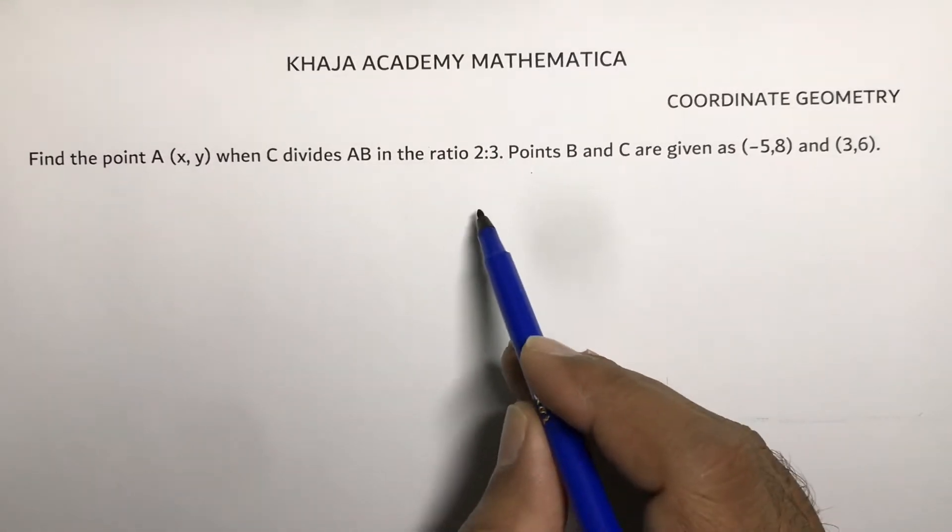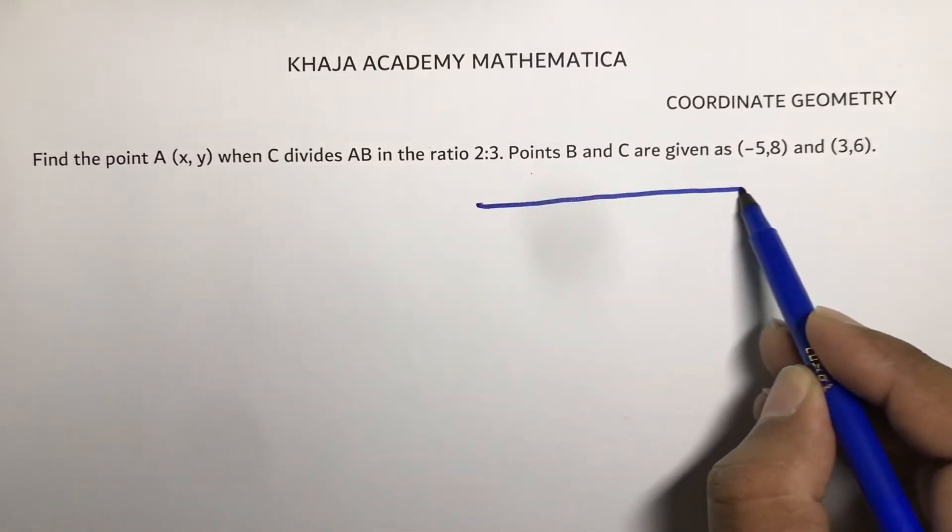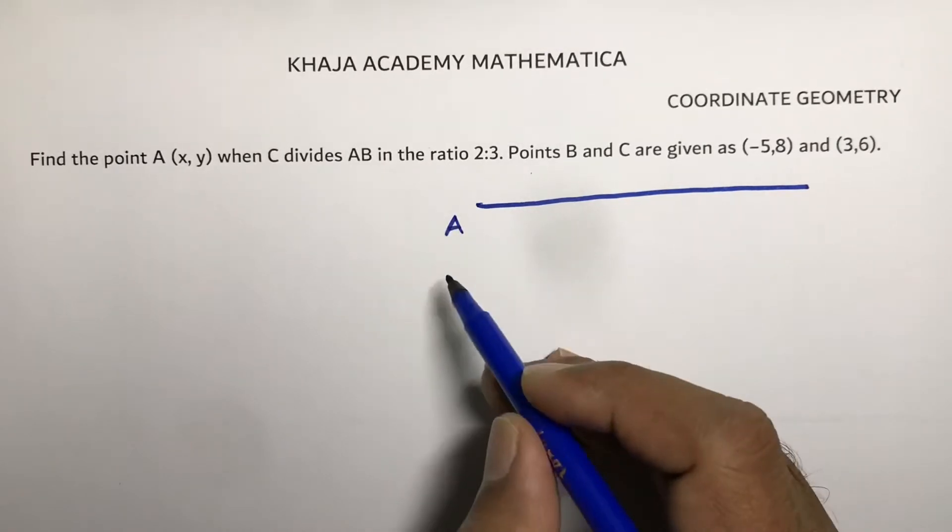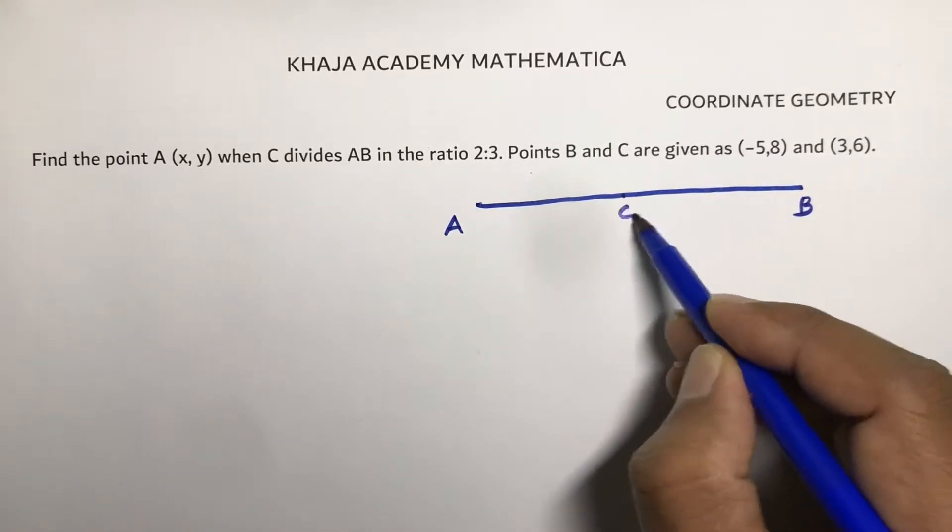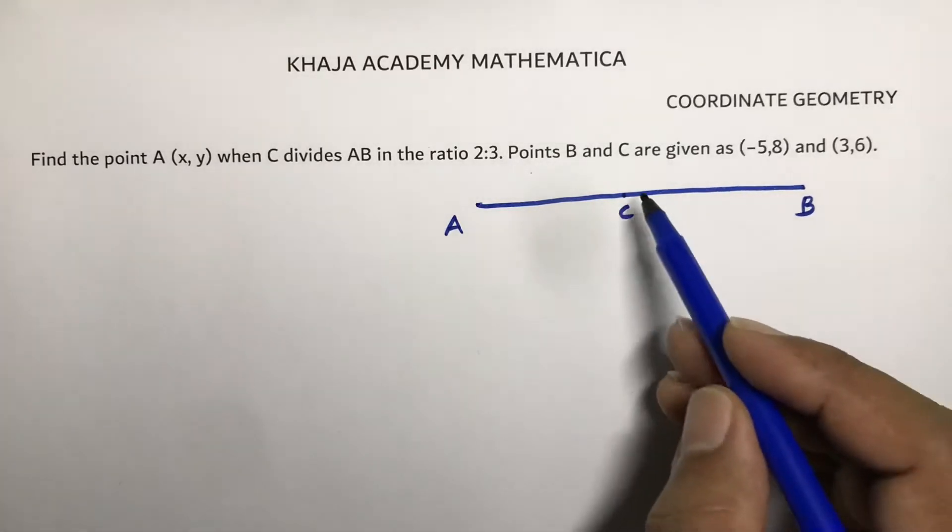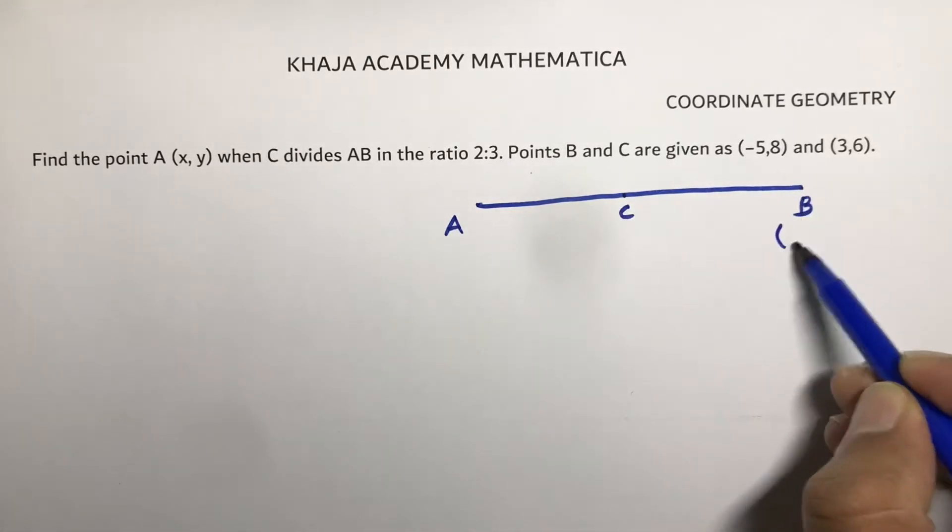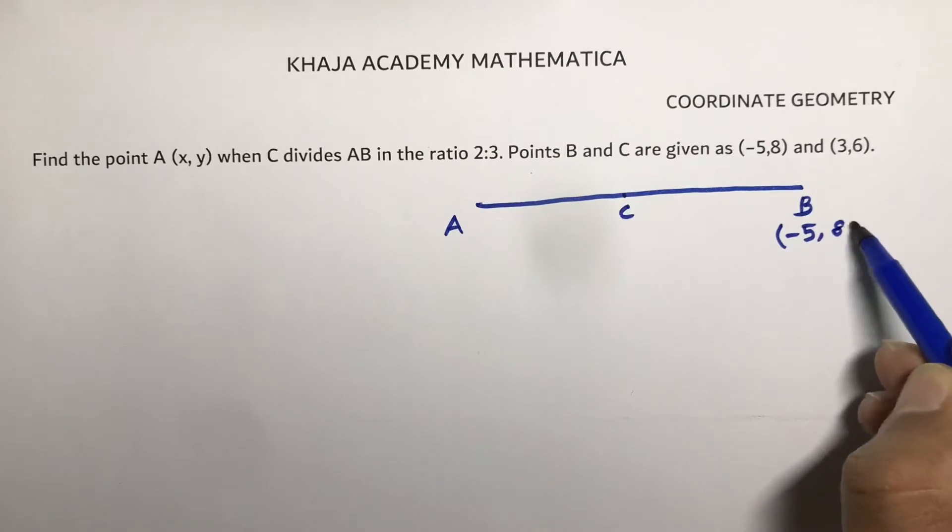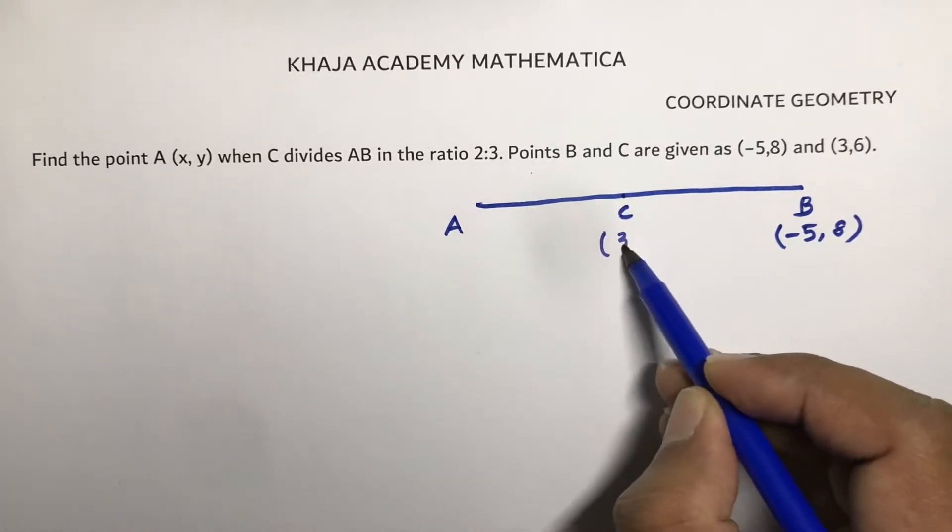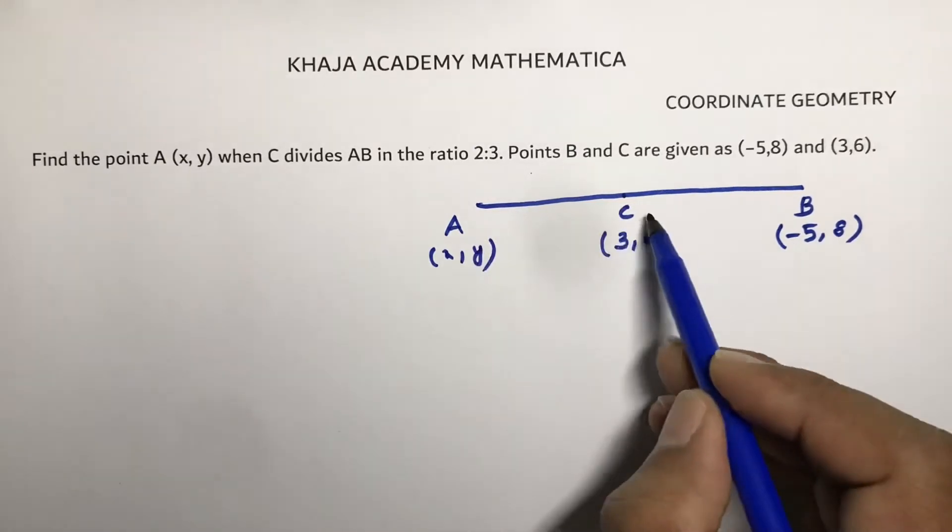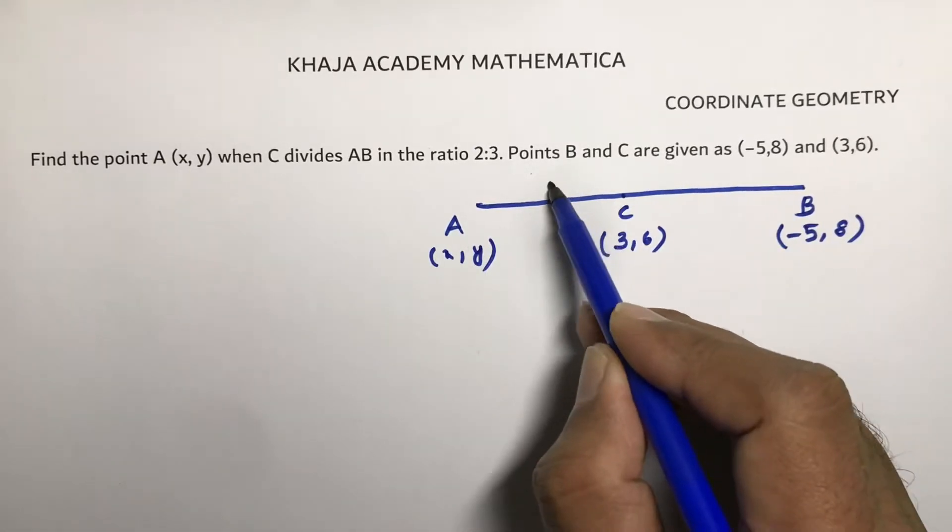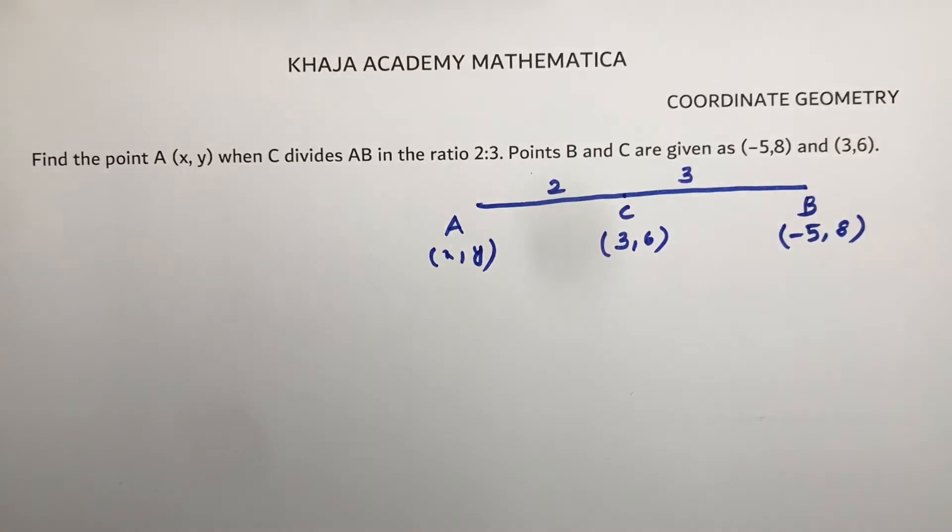So C divides AB. Here B and C are given. B is minus 5 comma 8, C is 3 comma 6, A is X comma Y, and C divides AB in the ratio 2 is to 3. So we need to find the point A.